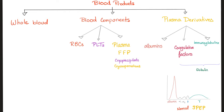Whole blood contains everything. Blood components include red blood cells, platelets, and plasma. The plasma could be fresh frozen plasma, cryoprecipitate, or cryosupernatant. Plasma derivatives include albumins, the coagulation factors — which are beta globulins — and the immunoglobulins, the gamma globulins. And if you remember the normal serum protein electrophoresis, we had albumin, alpha-1 globulin, alpha-2 globulin, beta globulin, and gamma globulin.